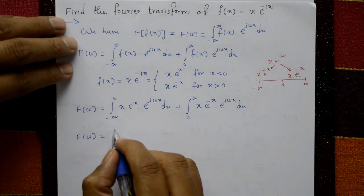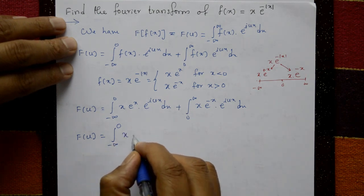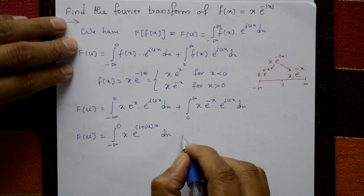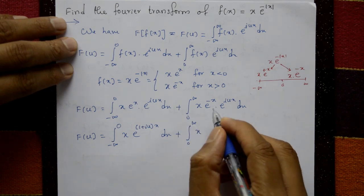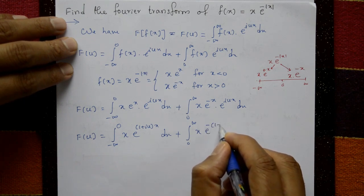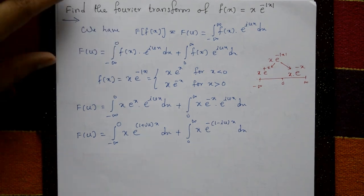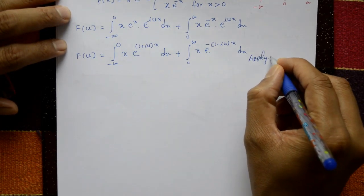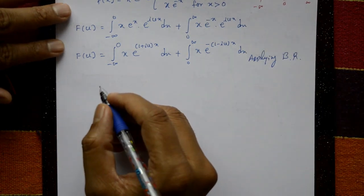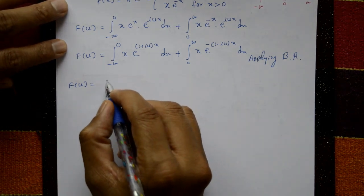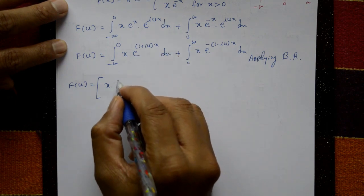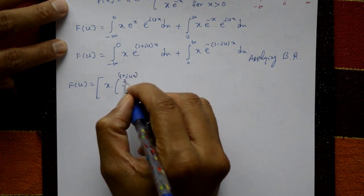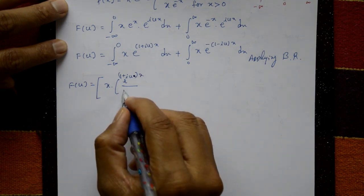F(u) equals the integration from minus infinity to 0 of x·e^(iux)·e^x dx, where the bases are combined as e^((1+iu)x). Plus the integration from 0 to infinity of x·e^(-x)·e^(iux) dx, with the common factor e^(-(1-iu)x). Now apply Bernoulli's rule: x as-is times e^((1+iu)x) divided by (1+iu), minus the derivative of x (which is 1) times e^((1+iu)x) divided by (1+iu)².